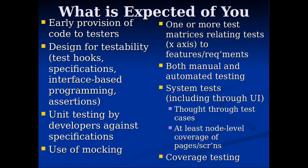Unit testing by developers against specifications — and along with this, assertions. I want to see assertions that are legion. They should be massive numbers arrayed through your code, ubiquitous, put into place based particularly on specifications. Assertions based on specifications: if you have the specifications, the assertions are almost a freebie — translate the specifications as captured in comments into an assertion. I'd like to see mocking in place: there are mocking frameworks for JavaScript, Java, and .NET — mocking frameworks for lots of different platforms.